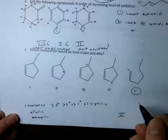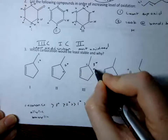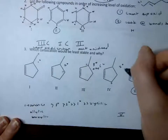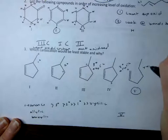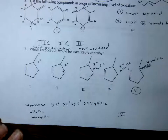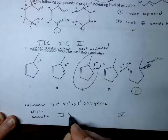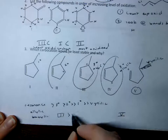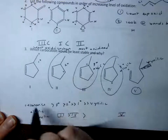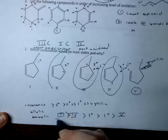I'm actually going to go as far as to rank all of them. This one is primary with no resonance; this is secondary with no resonance; this is tertiary and it's allylic; this is secondary and it's allylic; and then this is vinylic. We already decided that the vinylic one is not very good. Tertiary with resonance will be the best, then secondary with resonance. Then regular old secondary is better than primary, which is better than vinylic. That's how I would rank these.